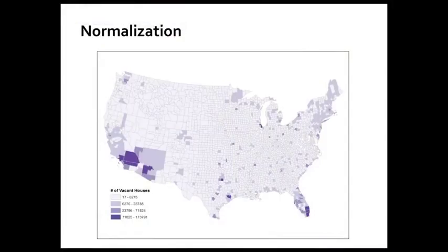Another key principle: you've got to map rates, not totals. Almost anything you can measure about people and society will be population dependent, meaning a map that isn't normalized will just highlight populated places — you'll see more stuff where there are more people, which is not very informative. Normalization calculates rates of occurrence as a proportion of overall population. For example, if you have county-level counts of smelly dogs, you'd divide by the total number of dogs per county to get a stink rate. Looking at the total number of vacant houses by county in the U.S., the highest categories simply show major U.S. cities — we've just learned that where there are more houses, there are more vacant houses. That's no fun.